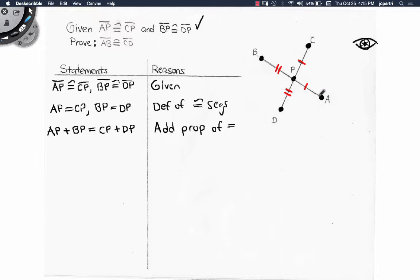Now let's just look at the picture. What is AP plus BP? Well, it's the larger segment. So this is AB. And what is CP plus DP? Well, it's the larger segment. It's CD.